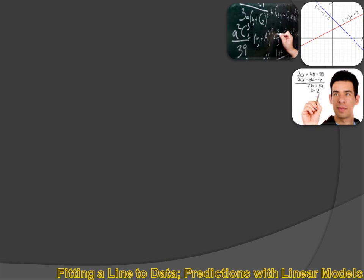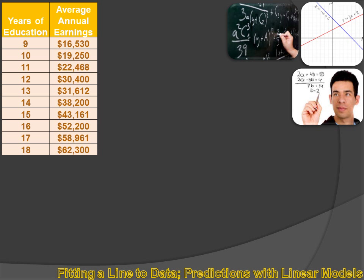Let's look at an example. Let's say I wanted to find out if there was a relationship between the amount of education that somebody received and the amount of money they earned later when they got a job. The Census Bureau collects data like that. And this is their data. The Census Bureau surveyed a bunch of people and concluded that, on average, those with nine years of education earned $16,530 a year. If they had 10 years of formal education, they earned $19,250 and so forth.